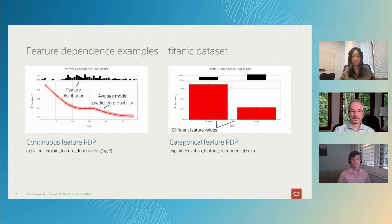On the right, you can see a categorical partial dependence plot for the sex feature, shown as a bar plot. You can see again that women are more likely to survive in this case.